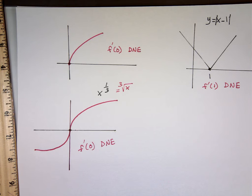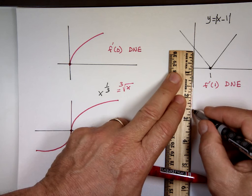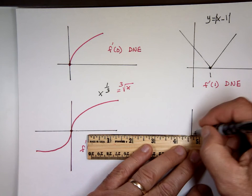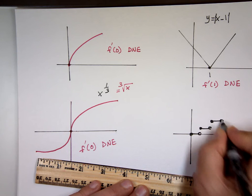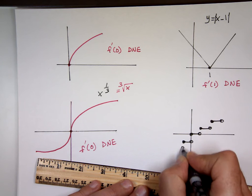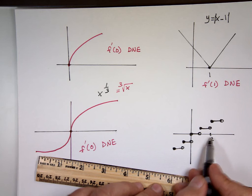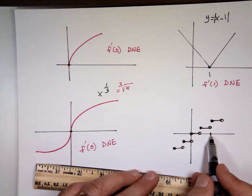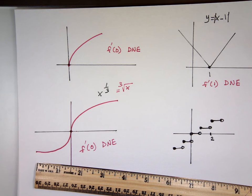Anytime you see a sharp V in the graph, the derivative does not exist at that point. And anywhere there's a hole — a discontinuity — the derivative does not exist. Those are the key cases to watch for.